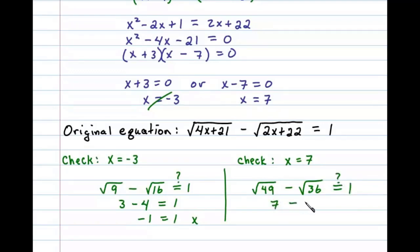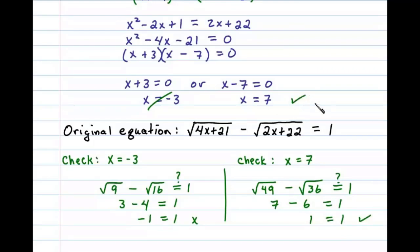We need to see if that equals 1, and here we can see 7 minus 6 certainly does equal 1 — we get a true statement in the original equation. So x equals 7 is our only solution to this equation.